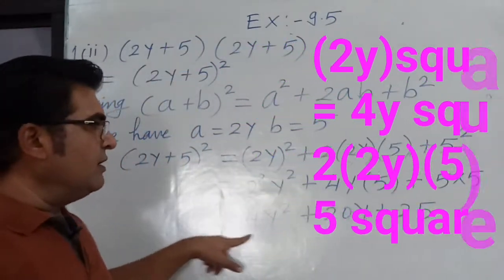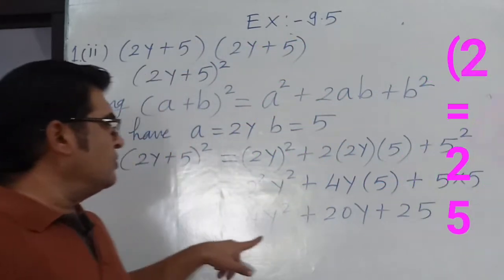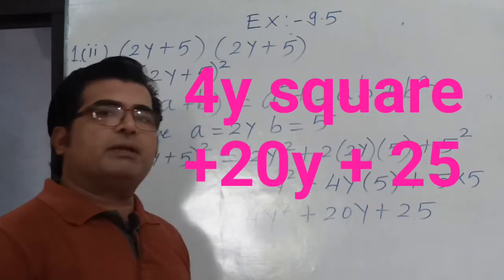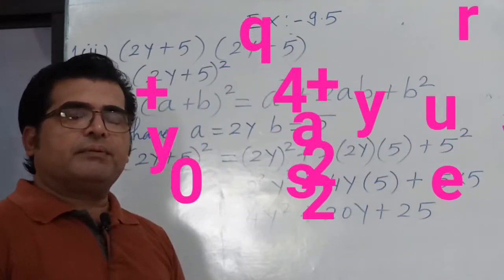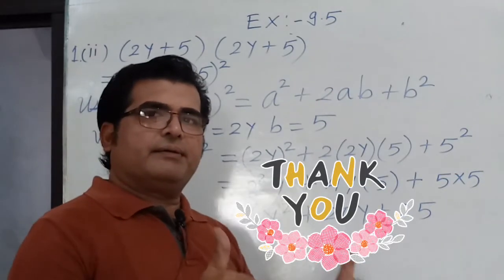Now, all three are unlike terms. So the answer is 4y square plus 20y plus 25. Thank you, have a great day.